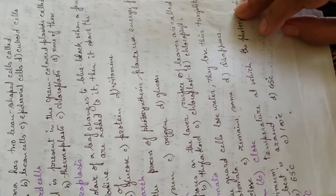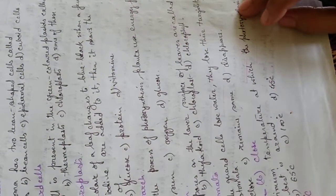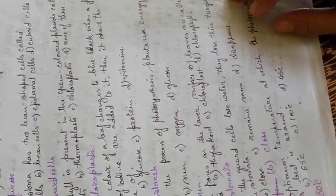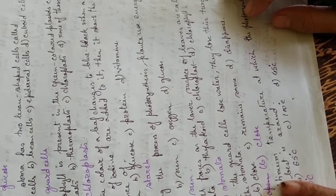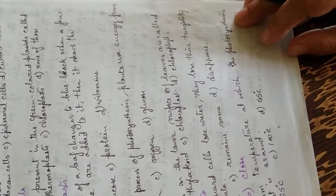The eighth question, small pores on the lower surface of the leaves are called stomata, thylakoid, chloroplast, or chlorophyll. The answer is stomata.